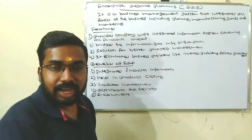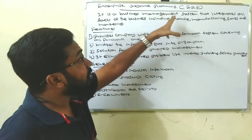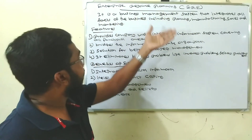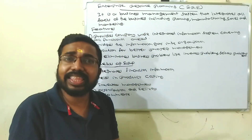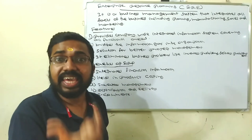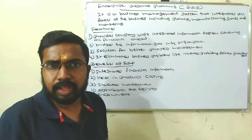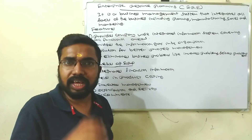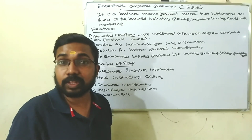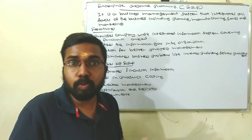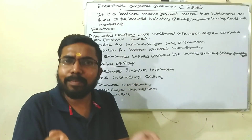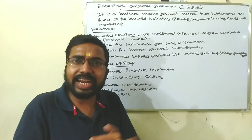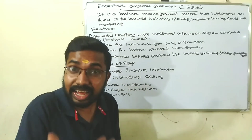ERP is a business management system that integrates all facets of business, including Planning, Manufacturing, Selling, and Marketing. Large organizations can use this information system, though it involves capital expenditure. Smaller and medium organizations can also adopt suitable versions.